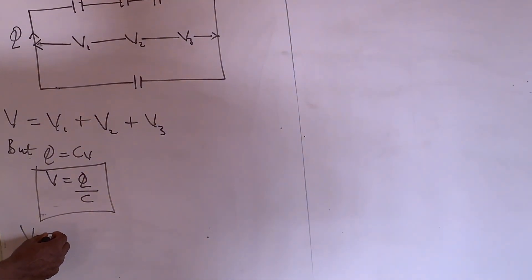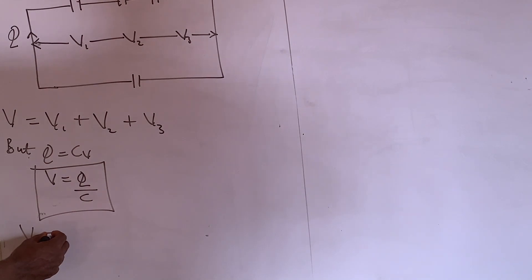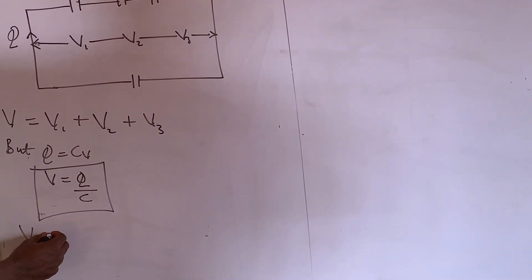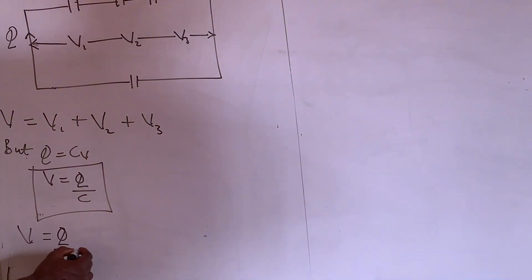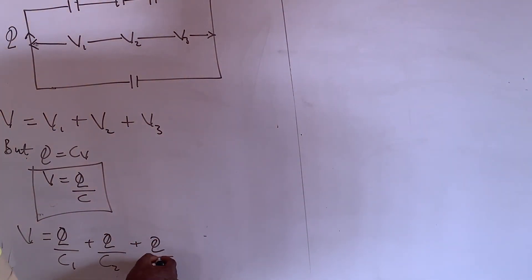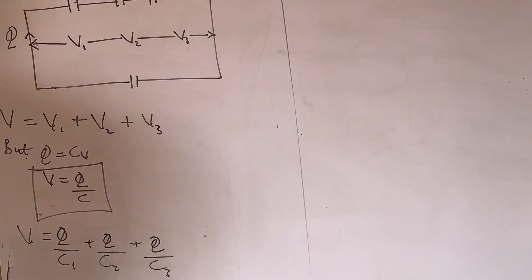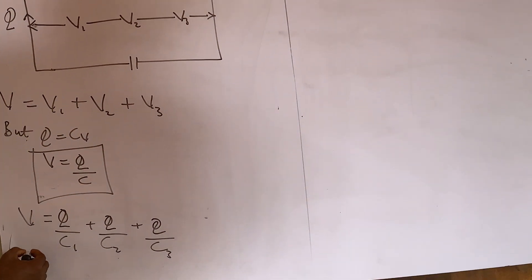Okay. Now, since we've established this fact, V is equal to what? Anywhere I see V, I represent it with Q over C. But in that case, it's going to be Q over C1. Q over C1 plus Q over C2, because we are told that the Q is the same, plus Q over C3.